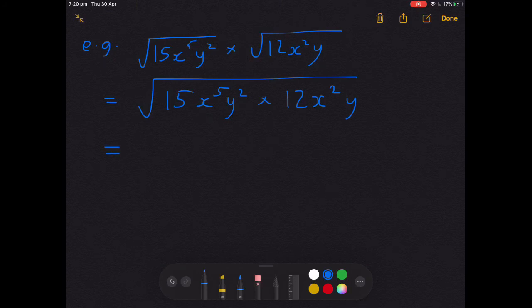We're going to multiply them together using index laws. 15 times 12 is 180. I didn't actually know that one, I had to look it up in a previous cut of this video. Now I seem really smart. x to the fifth times x squared is x to the seventh. y squared times y is y cubed.